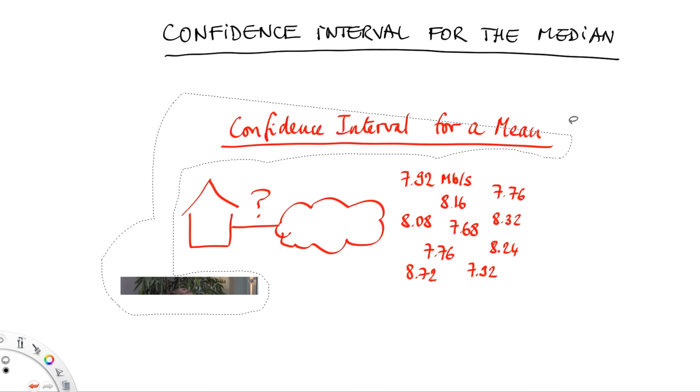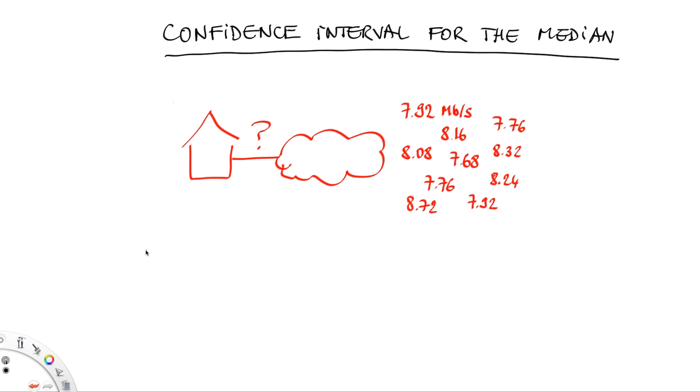We have measured the results of 10 experiments and obtained the values of the performance of our internet access in megabits per second. They all are around 8 megabits per second. To summarize the data, instead of computing the mean, we can compute the median.